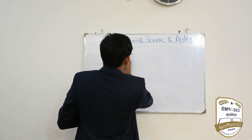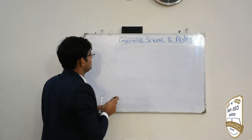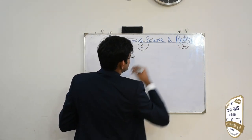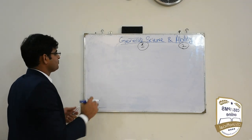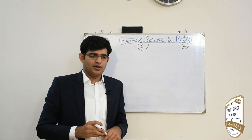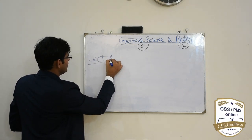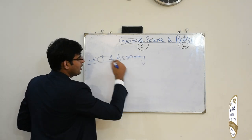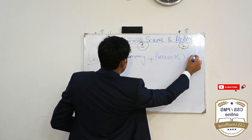اب ہم دیکھتے ہیں کہ اس کو کس طرح پڑھیں گے۔ اس کے دو portions ہیں — ایک general science اور ایک general ability۔ ہم اس کو lecture-wise اور weekly cover کریں گے۔ پہلے lecture میں ہم astronomy part plus processes of nature cover کریں گے۔